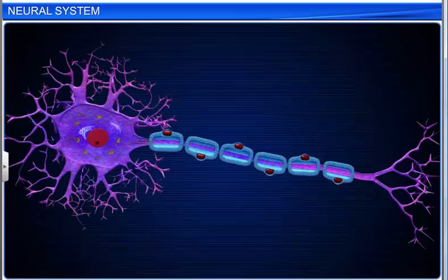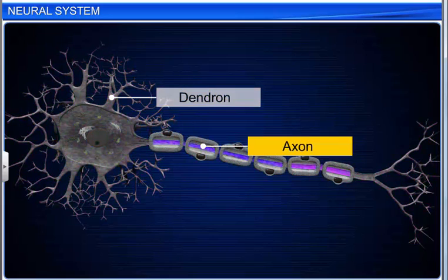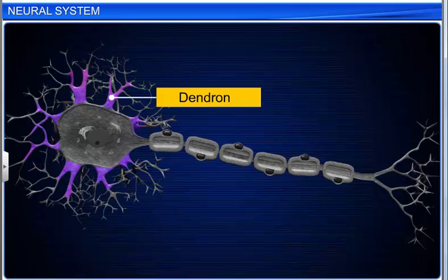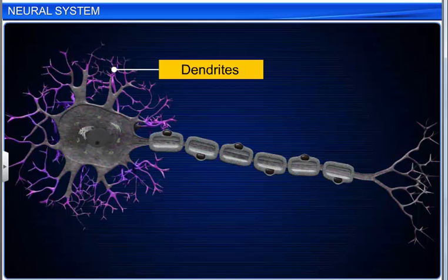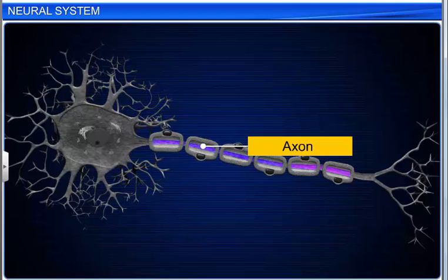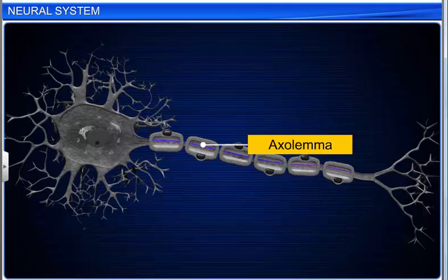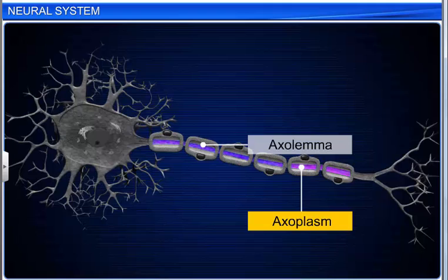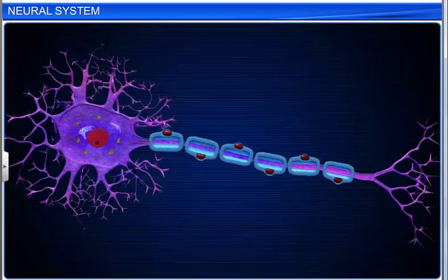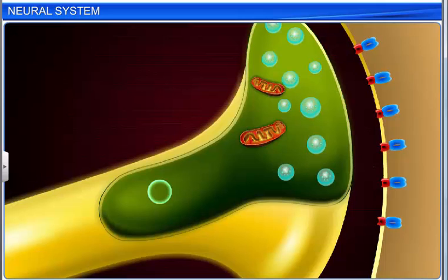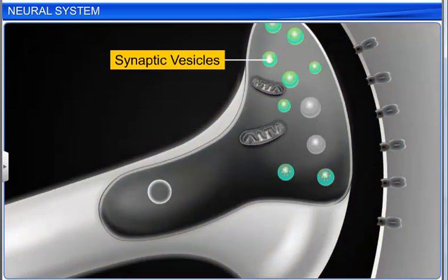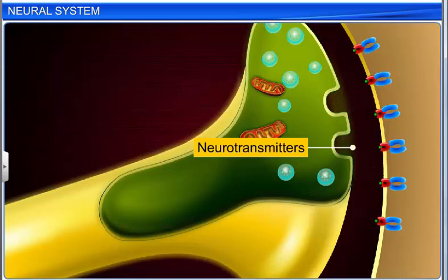Nerve processes are of two types: dendrons and axons. Dendrons can be one or more in number; their fine branches are called dendrites, and they transmit impulses towards the cell body. An axon is always single. It is covered by a plasma membrane called the axolema, and the inner fluid of an axon is known as axoplasm. The distal branched end of an axon forms a knob-like swelling called a synaptic knob, which possesses synaptic vesicles that contain chemicals called neurotransmitters.